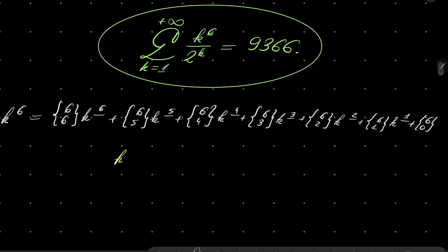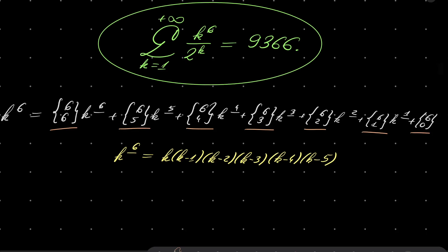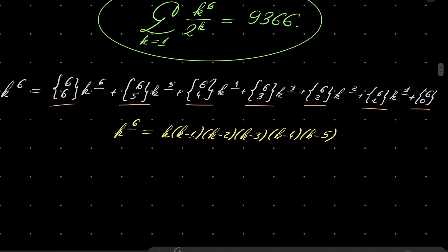If you don't know this, for example k to the sixth falling is k times k minus one times k minus two times k minus three times k minus four times k minus five, for example, and so on. These numbers, there is a nice recursion for Stirling numbers of the second kind. For example you can read about it in Concrete Mathematics textbook. It has a brilliant chapter on these numbers.